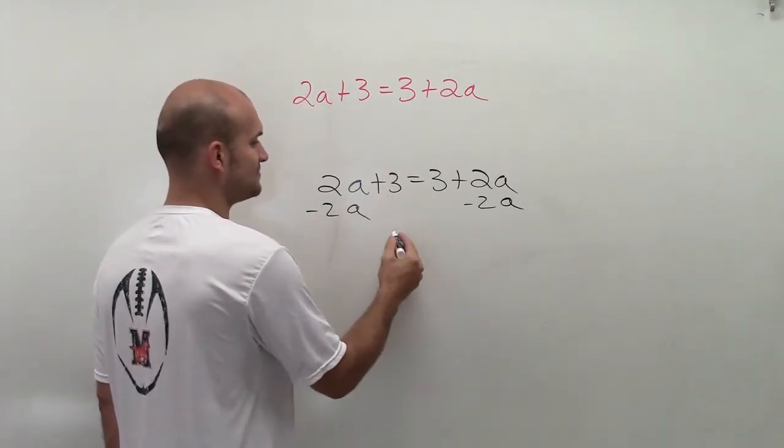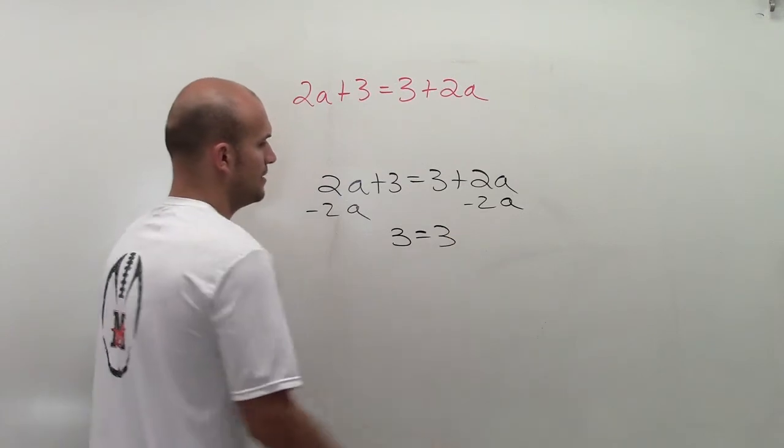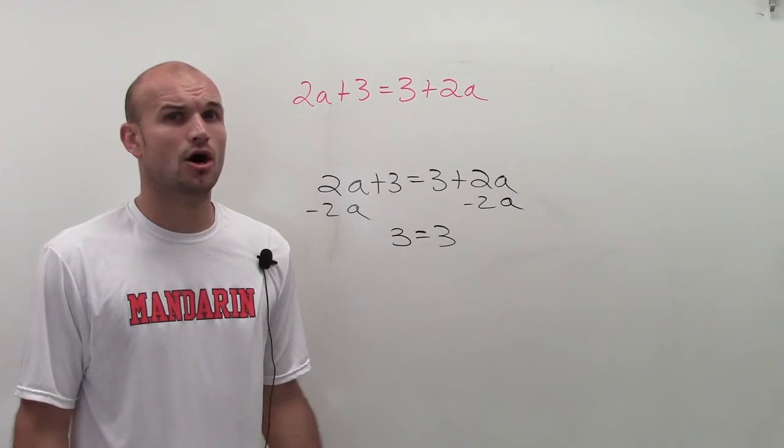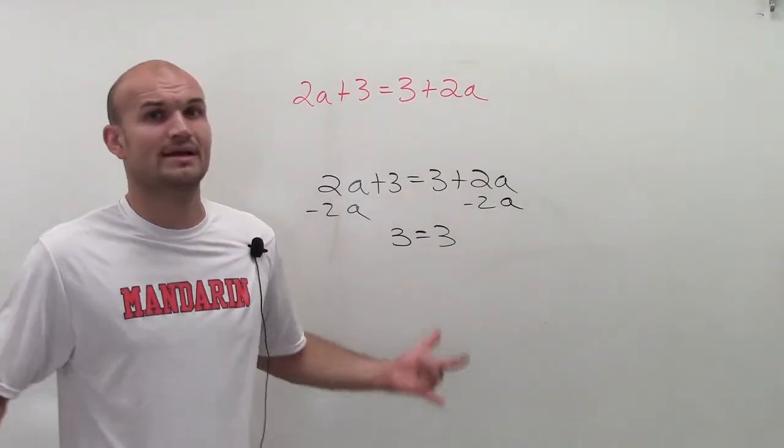What happens is you notice that both my 2a's go to 0, leaving me with 3 = 3. So it's always equal - 3 always equals 3.